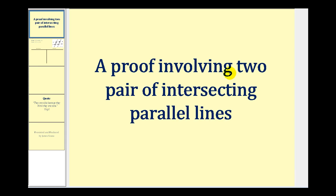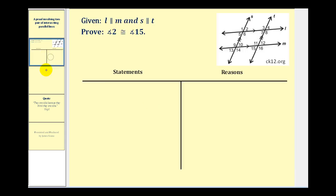Welcome to a proof involving two pairs of intersecting parallel lines. We're given that lines L and M are parallel and S and T are parallel. You can see they intersect and form 16 different angles. We want to prove that angle two is congruent to angle 15.